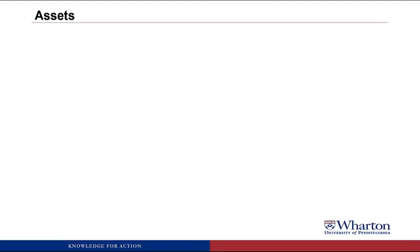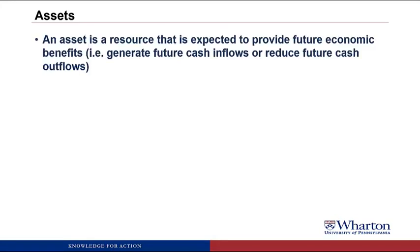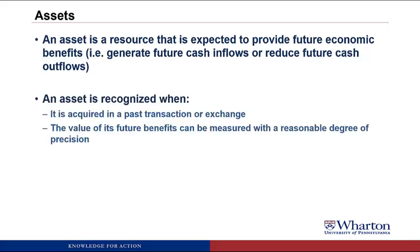Let's start with assets. An asset is a resource that's expected to provide future economic benefits — either generating future cash inflows or reducing future cash outflows. There are two criteria we use to decide when to recognize an asset. First, it must be acquired in a past transaction or exchange. Second, the value of its future benefits can be measured with a reasonable degree of precision. For example, if we buy a truck, the truck would be considered an asset. We acquired ownership in an exchange, and the value of the benefits equals the price we paid.